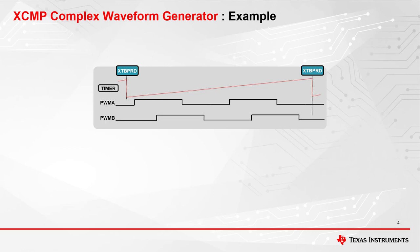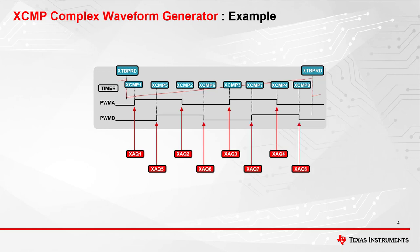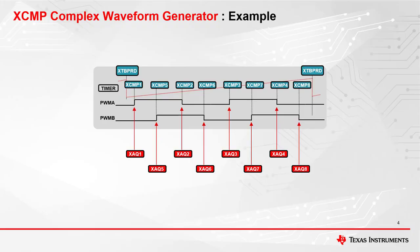Now let's take a look at an example of this mode along with the loading schemes from shadow to active. For this example, we have our extended time-based period and split the extended compare registers between PWM-A and PWM-B. Four of the XCMP registers will be allocated to PWM-A and the other four will be going to PWM-B. For each XCMP value, we can have an XAQ action to occur to toggle PWM-A and PWM-B. With XCMP mode, we are able to generate two pulses within the period for both PWM-A and PWM-B. The CMP-A and CMP-B registers will reflect what is in the XCMP active registers during execution.